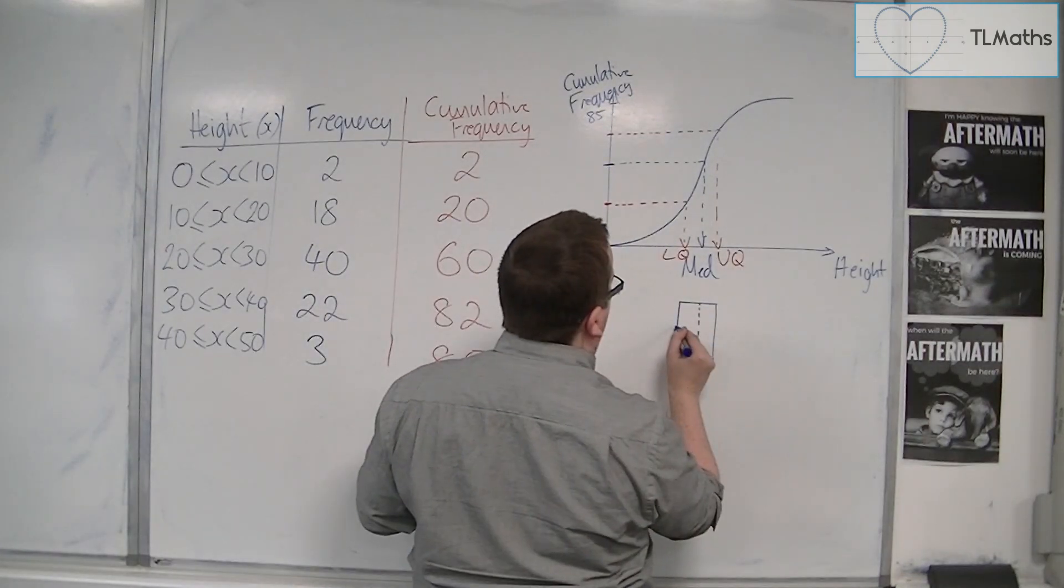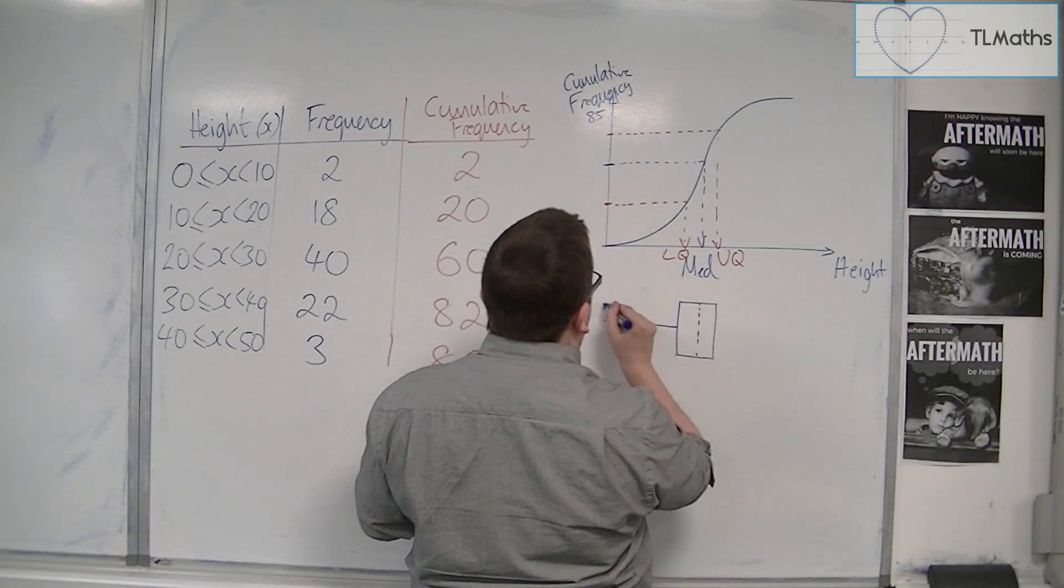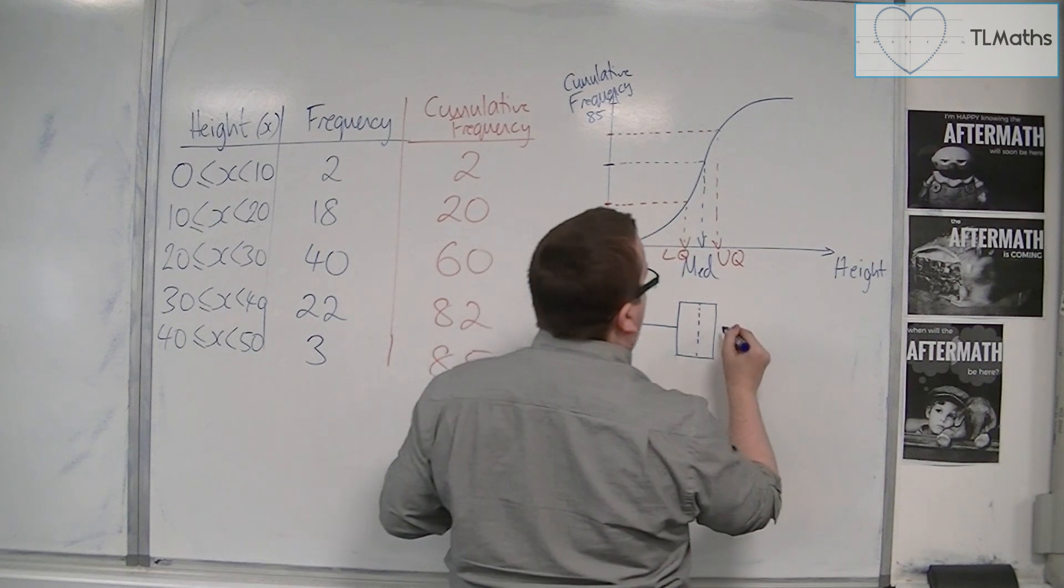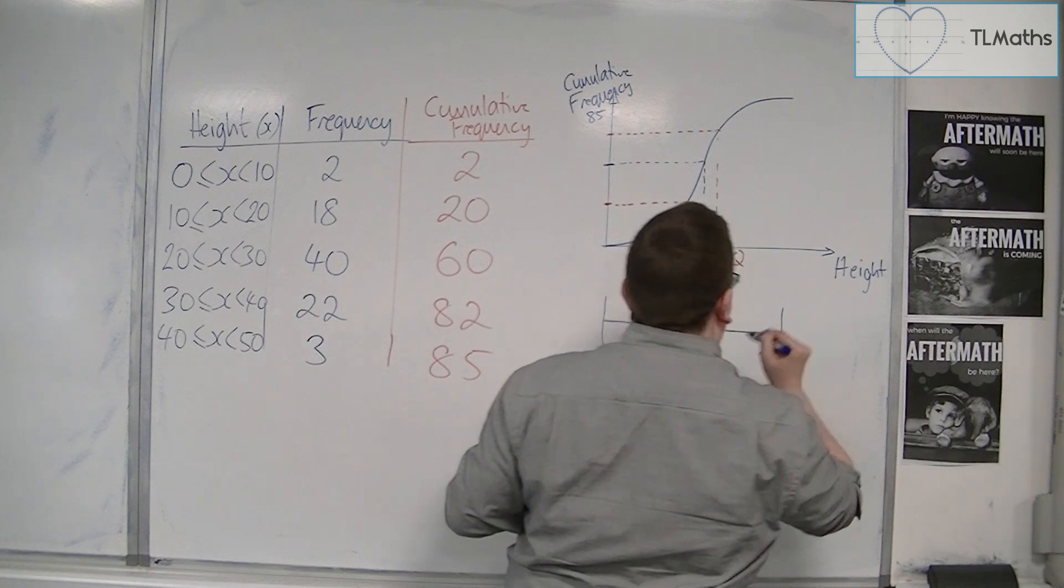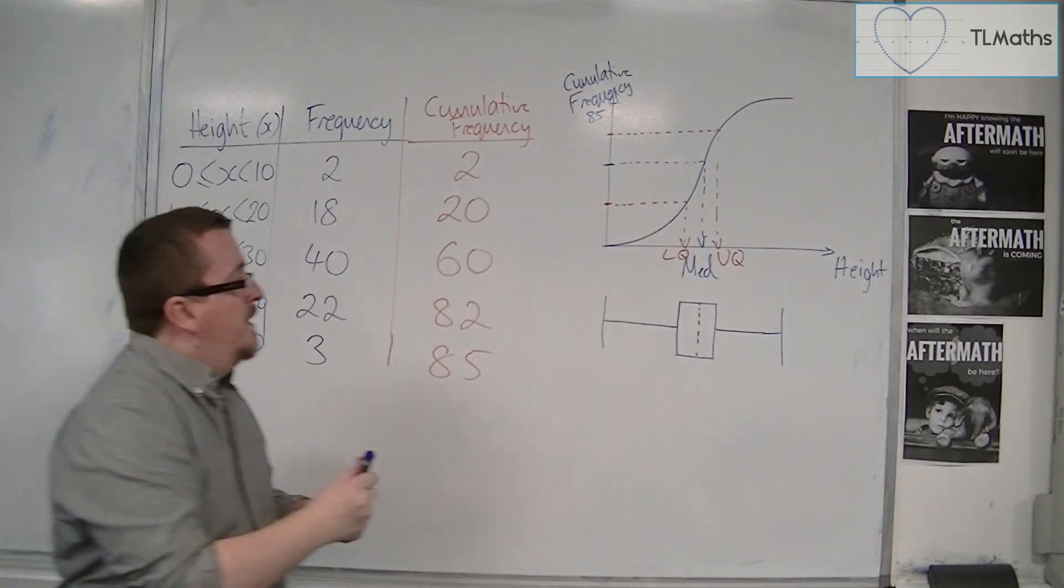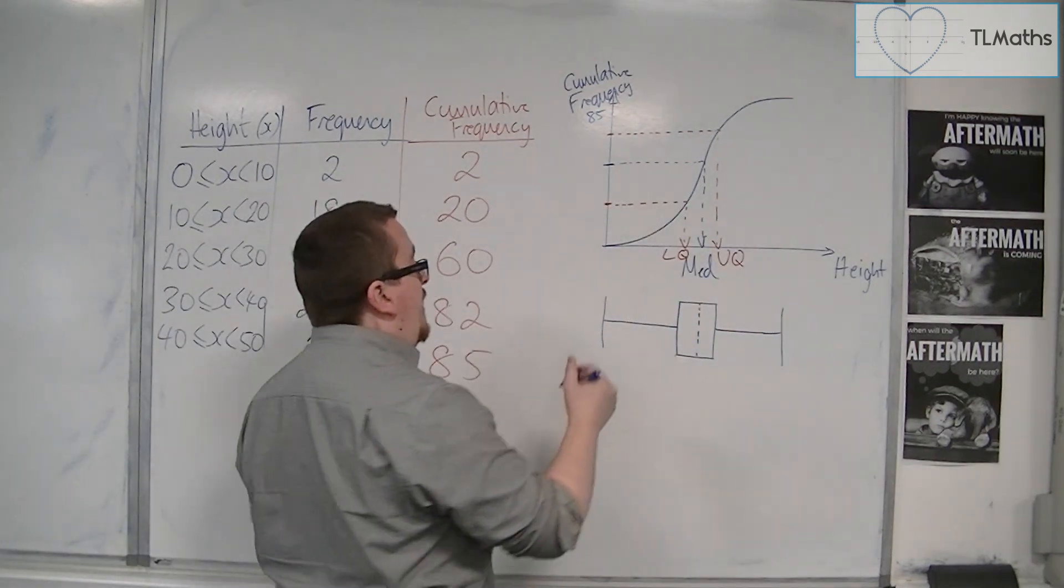And then we would have line going off, this is my minimum value, and line going off. And so, this would be my maximum value. So, they line up in exactly the same way.